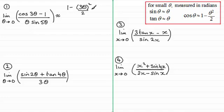And then we've got this minus one here and then all of that is divided by theta times, and the approximation for sine five theta will be five theta.